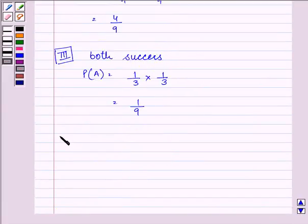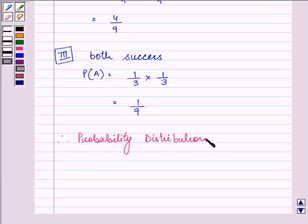Therefore, probability distribution will be like this. So, there is no success, 1 success and both success.